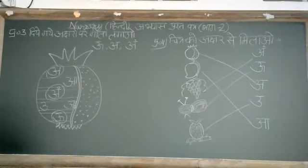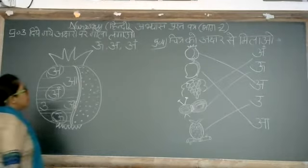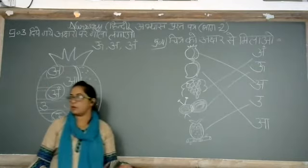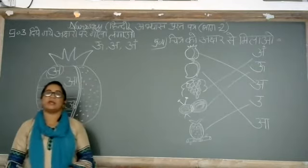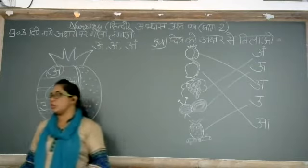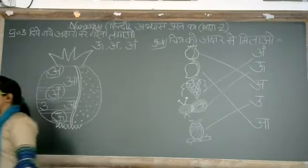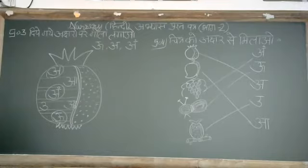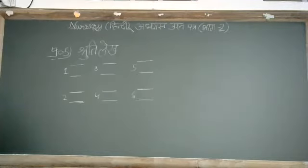Hame ne aapne question number three aur question number four — anar — ab hum karenge aapna next question, question number five. Aur last. Shruti lake. So question number five hai — Shruti lake.